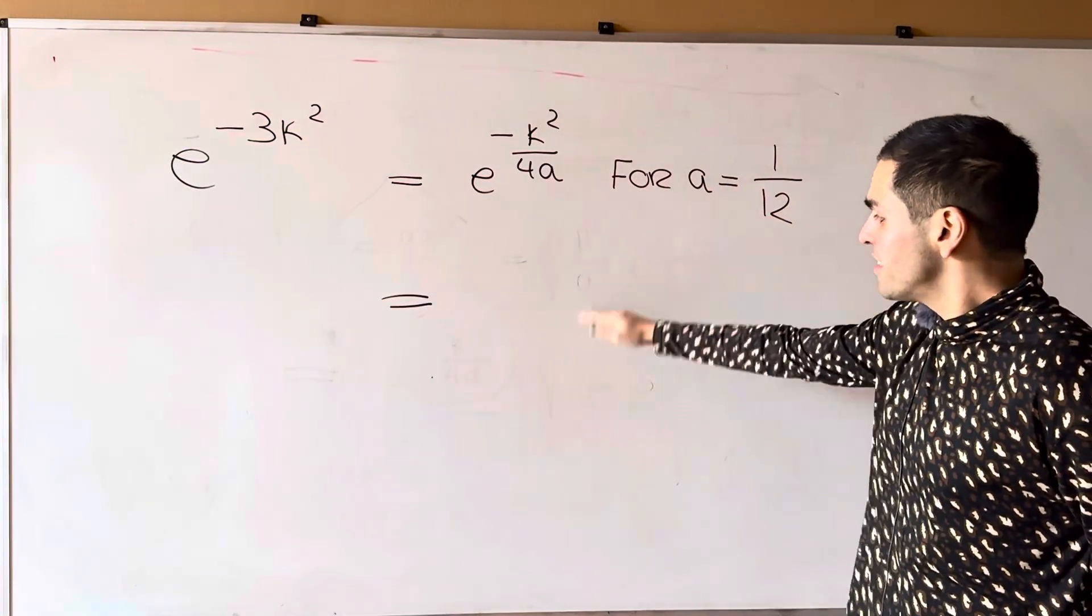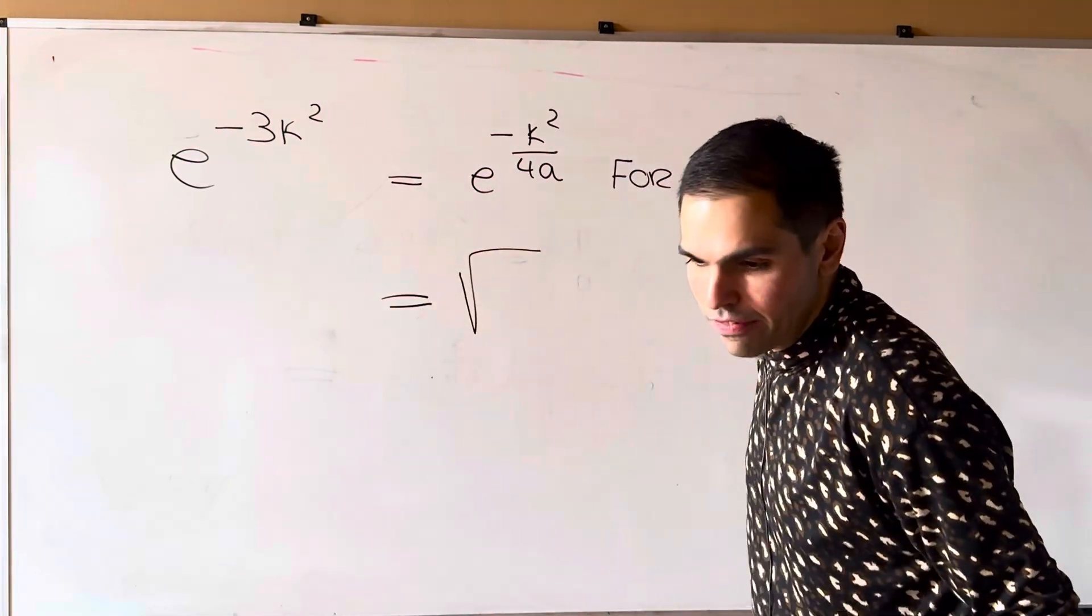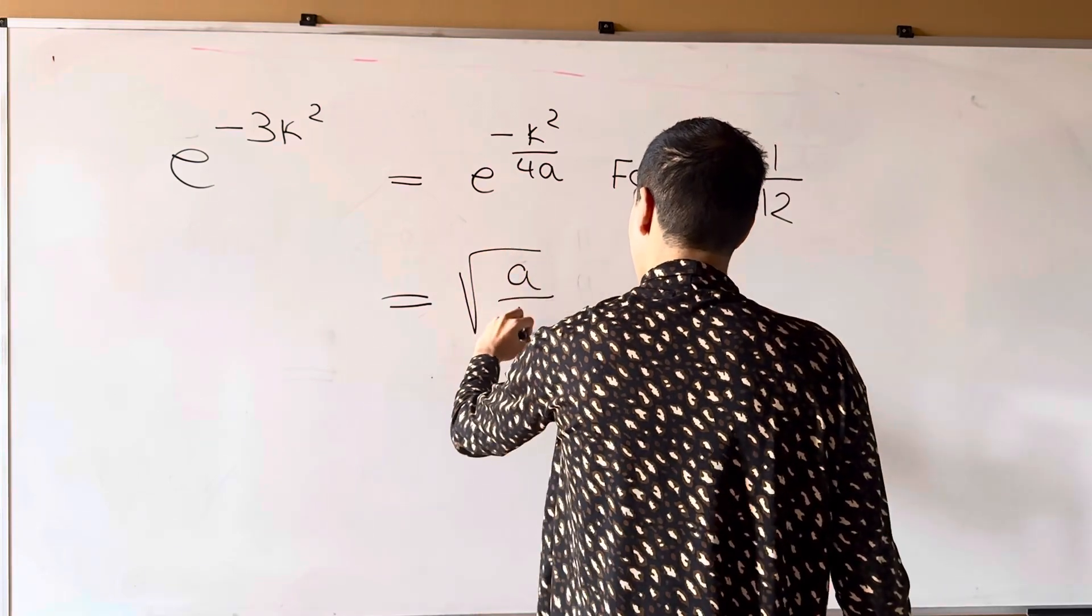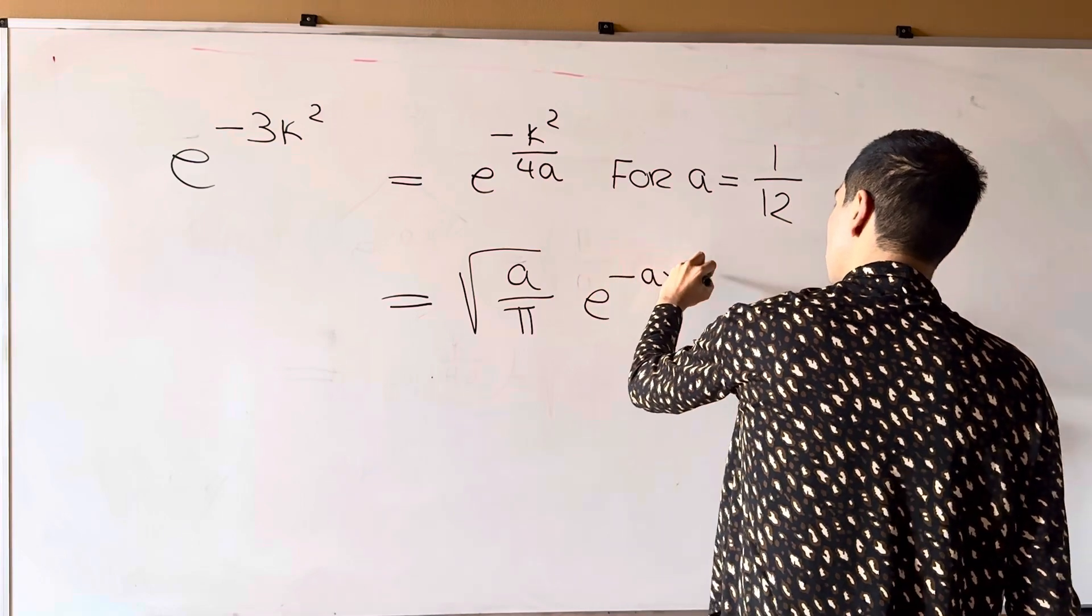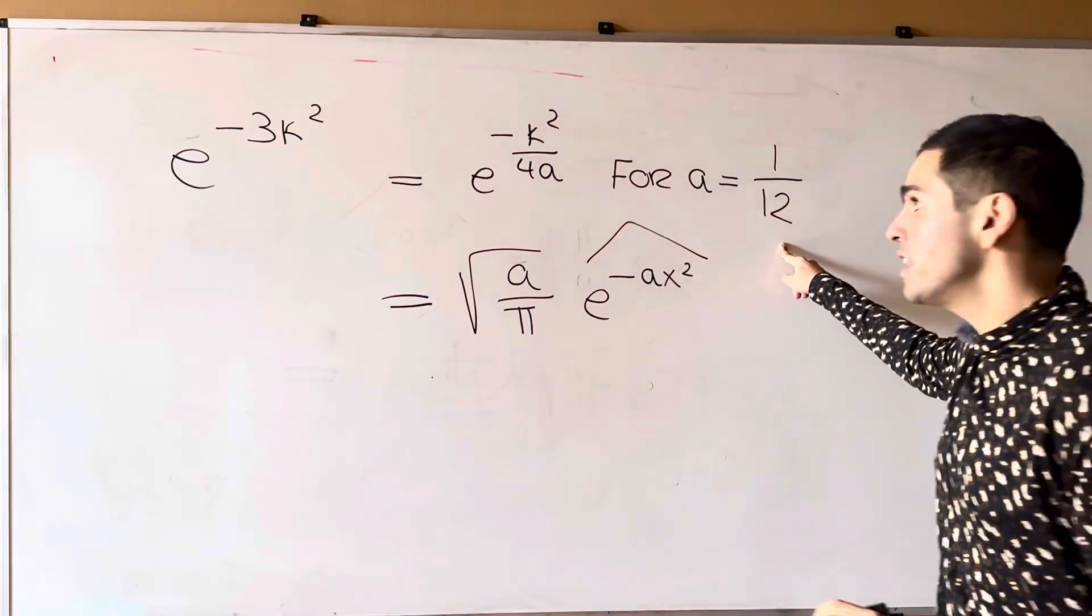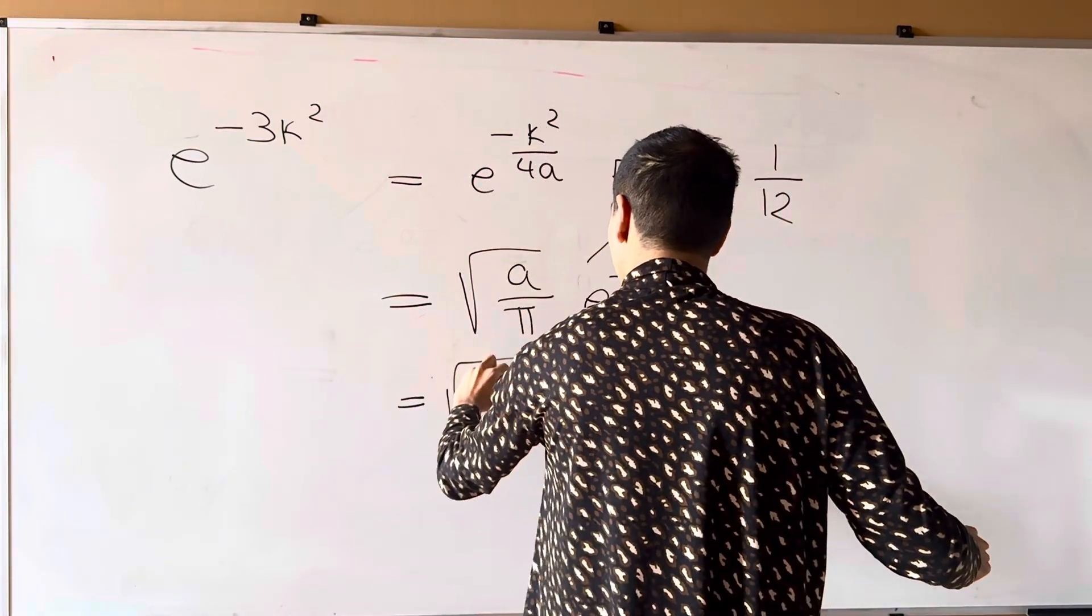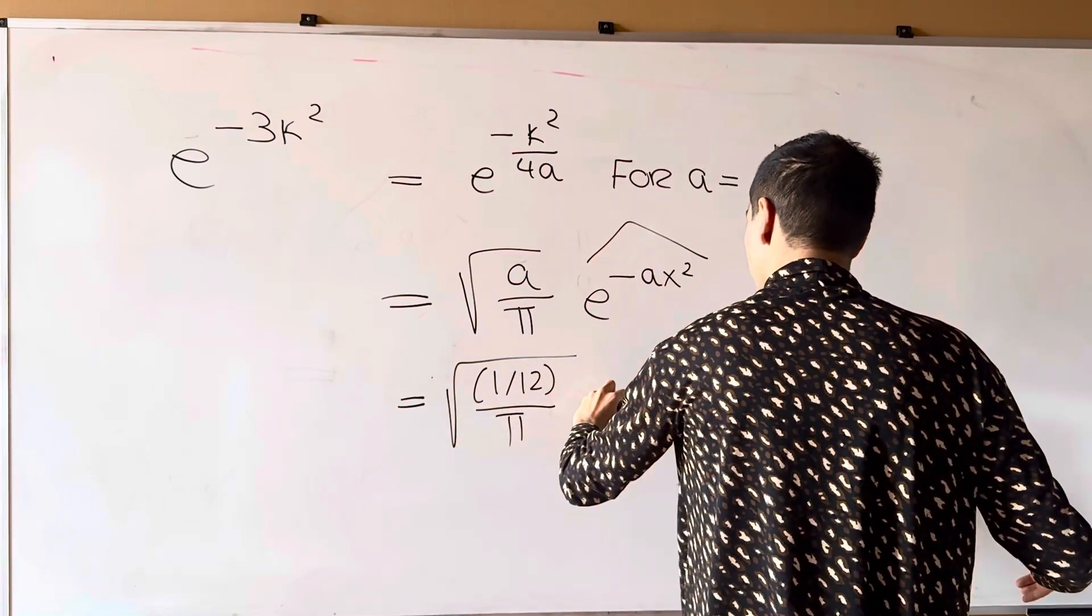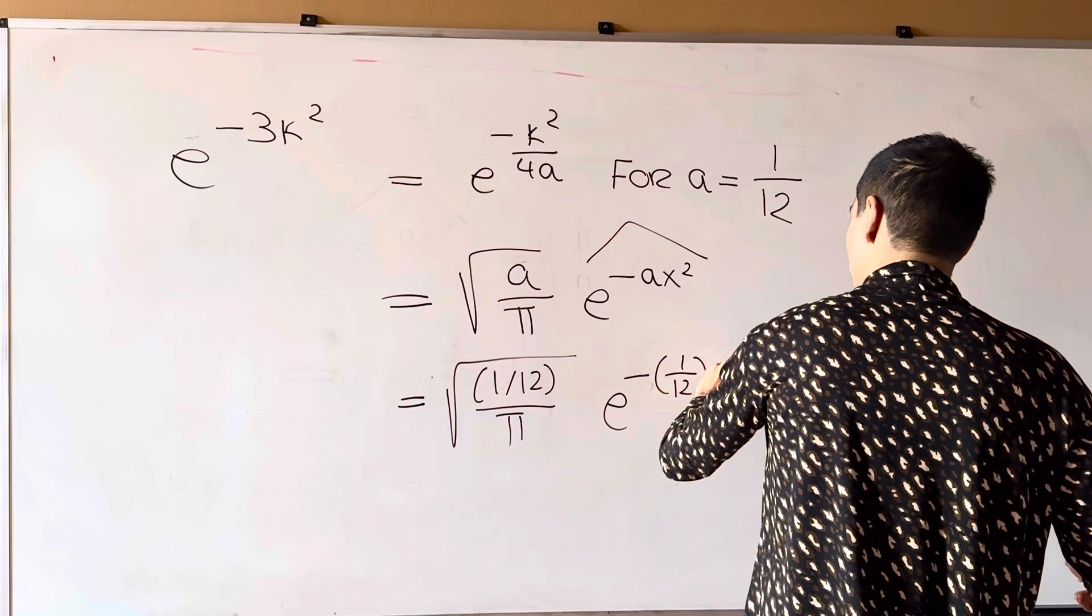And that is the same as square root of, I believe, a over pi, and then e to the minus ax squared hat. So now, all you need to do is plug in a equals 1 over 12. So it's square root of 1 over 12 over pi times e to the minus 1 over 12 x squared hat.